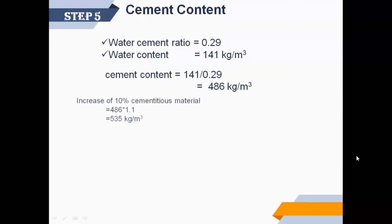Step 5: Cement content. We've chosen water-cement ratio of 0.29 from the previous step, and water content is 141 kilograms per cubic meter. After calculating, we get cement content equal to 486 kilograms per cubic meter.